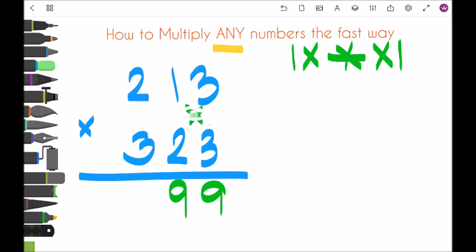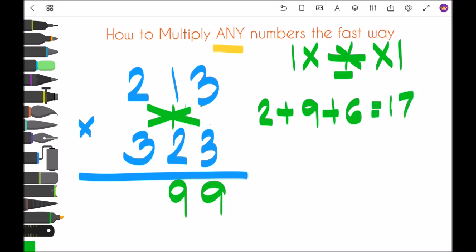Next, next is the three. So first is two times one is two, three times three is nine, two times three is six. So two, plus nine, eleven, plus six is seventeen. So seven carry one.